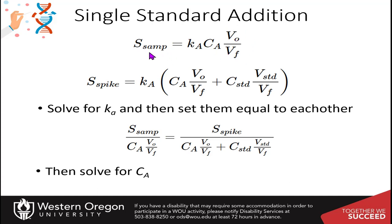The spike sample signal also contains the standard in addition to the unknown analyte. If the volume of the standard addition is very small relative to the overall solution, then the Ka value in the spike sample will be the same as in the unspiked sample. This is because the standard is concentrated and purified, so only a very small amount is needed, meaning it won't greatly affect the matrix.